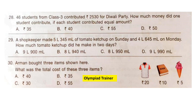Question 30: Arman bought 3 items shown here. What was the total cost of these 3 items? The cost of the t-shirt is Rs. 20, the book costs Rs. 10, and the ice cream costs Rs. 5. By adding these three we get Rs. 35. Option B is the correct answer.